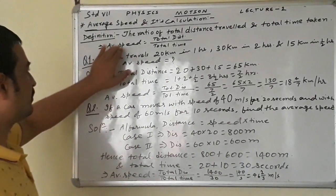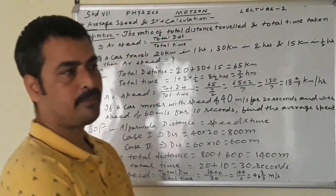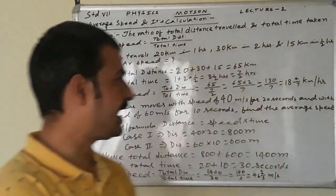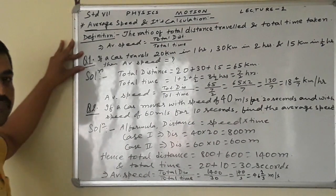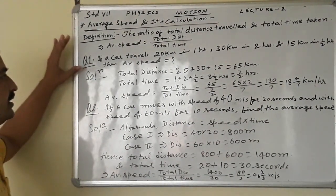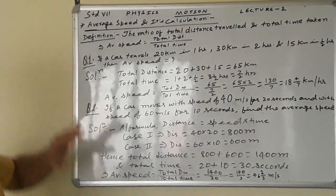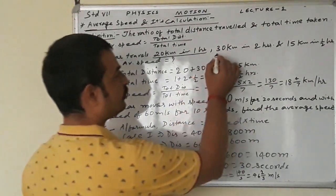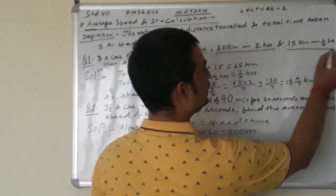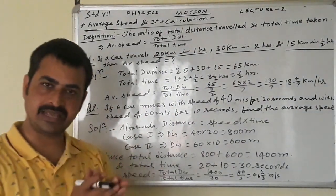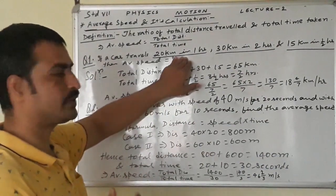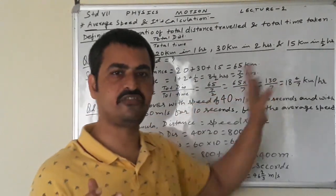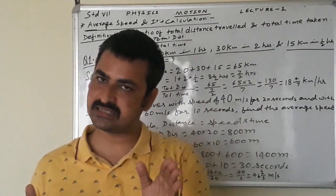Average speed equals total distance divided by total time. For better understanding, to make the concept more clear, I will explain question number 1. In question number 1, it is given that a car travels 20 km in 1 hour, 30 km in 2 hours, and 15 km in half an hour. So the journey is in 3 parts: first part 20 km in 1 hour, 30 km in 2 hours, 15 km in half hour. We need to find total distance and total time.